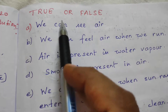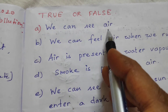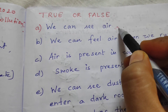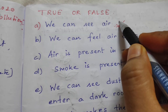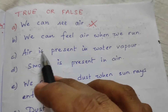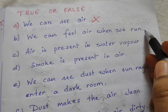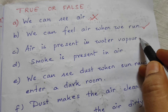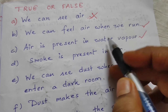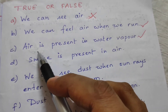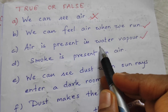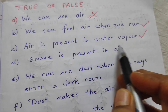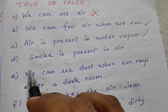Now we will do some true and false. Number A: We can see air, children? No — we cannot see air but we can feel it. So this is false. Number B: We can feel air when we run? Yes, it is true. Number C: Air is present in water vapor? Yes, it is also true, because when water is boiled it converts into water vapor, and that water vapor is present in air. So this is correct.